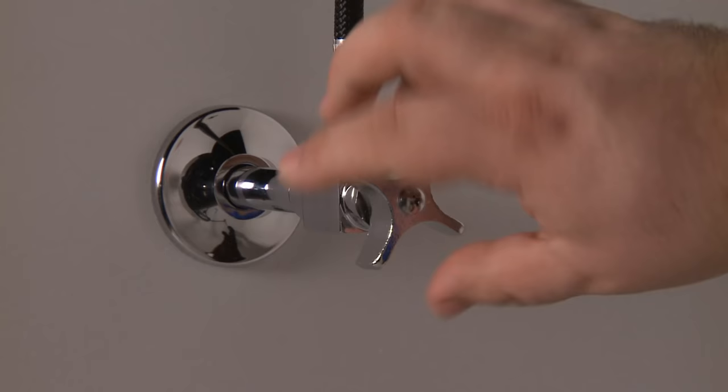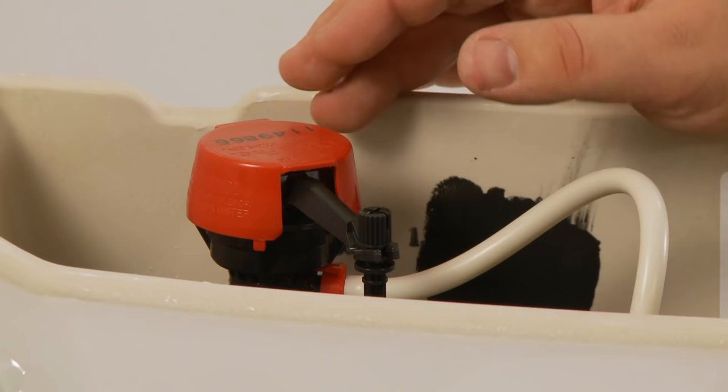To begin, turn off the water supply to the toilet. Remove the tank cover and locate the float cap assembly. In this toilet it's red, but it may be a different color in your toilet.